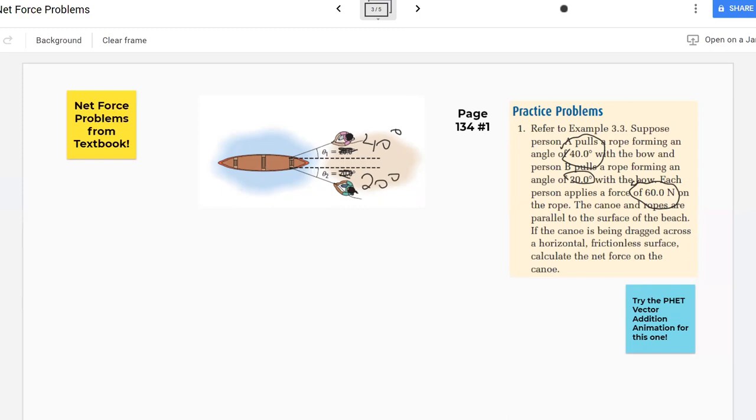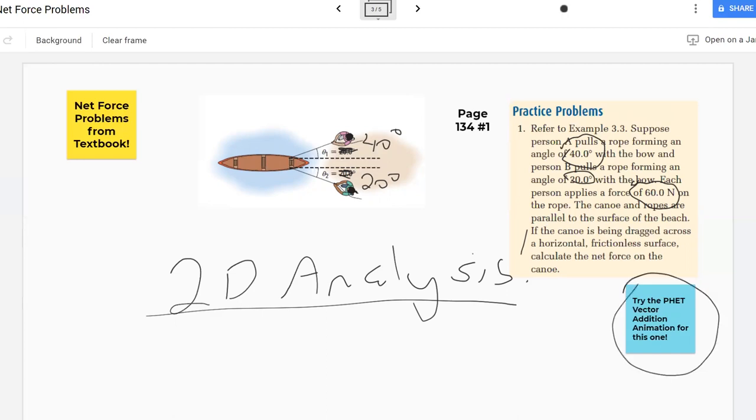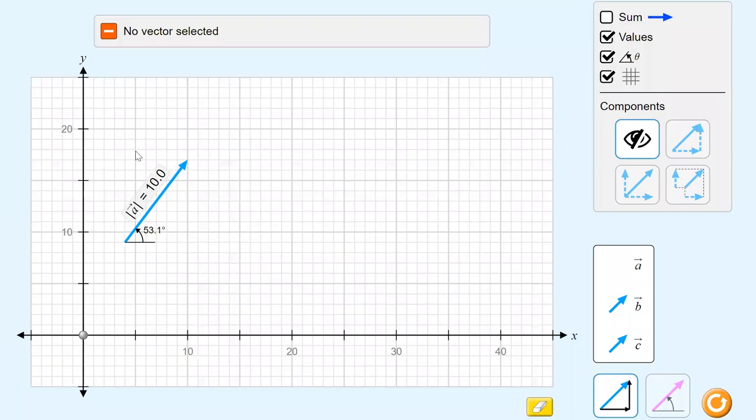And we're going to figure out what the net force is. Now, in this case, we can't just go and add these two numbers together. It's not just 60 plus 60 is 120. We need to do this in a 2D analysis, just like we did back in the first unit, where we're going to actually add these two vectors together using a ruler and protractor. But it's really hard to do a ruler and protractor here without actually being in person with you. So, there's a cool little thing you can try on the FET website. There's a vector addition animation. And that might be kind of neat to use for this one here. So, I'm going to flip over to that.